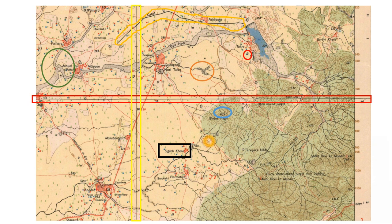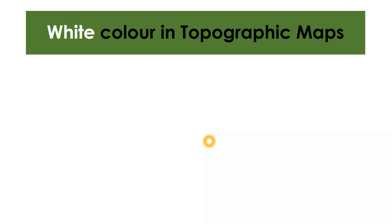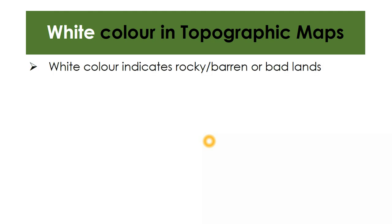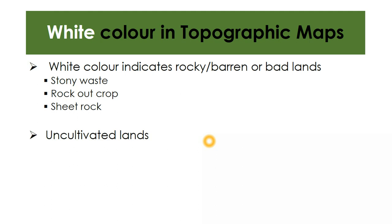Moving on, white color is mainly used for showing areas which are barren, rocky, or badlands. They may not be bad land in a literal sense — they may be ecosystems for animals and birds — but they are not used for cultivation, so we call them badlands or rocky lands or barren lands. This includes mainly three features: stony waste, rock outcrop, and sheet rock. Areas not used for cultivation other than rocky areas, called open scrubs — areas under vegetation but not suitable for cultivation — are also shown in white.